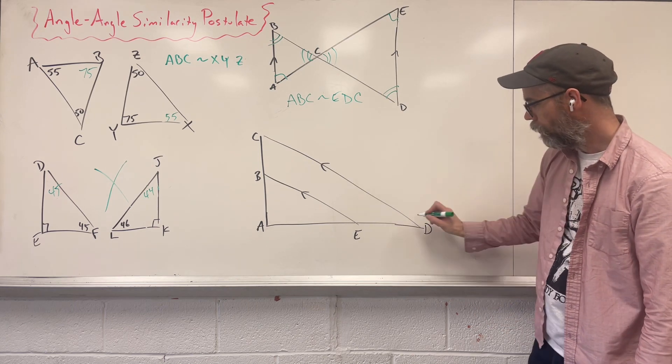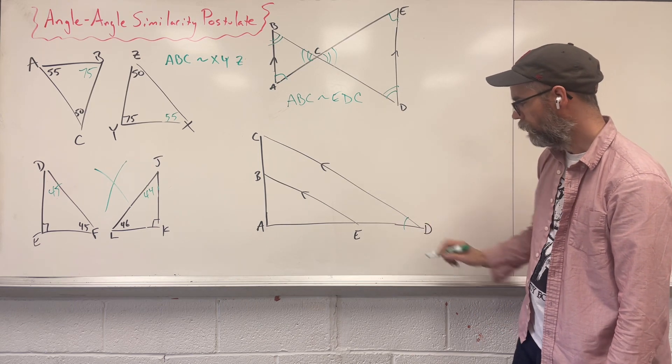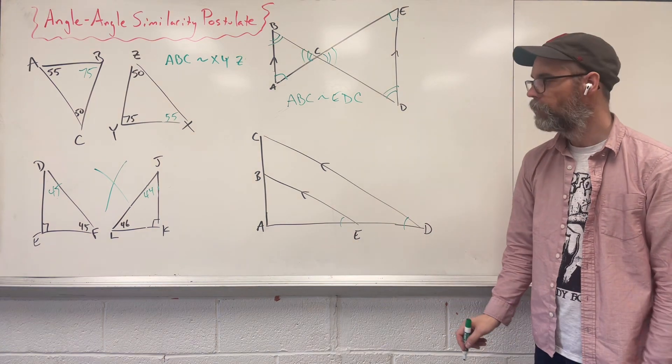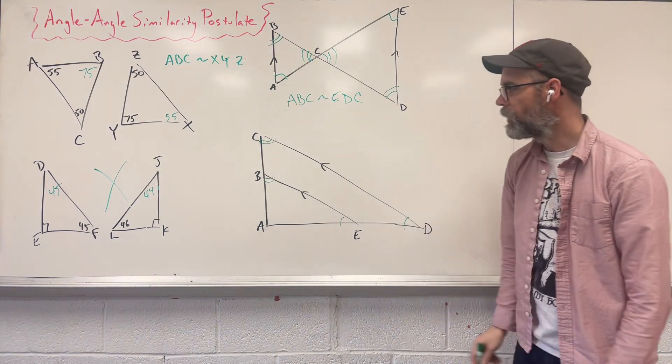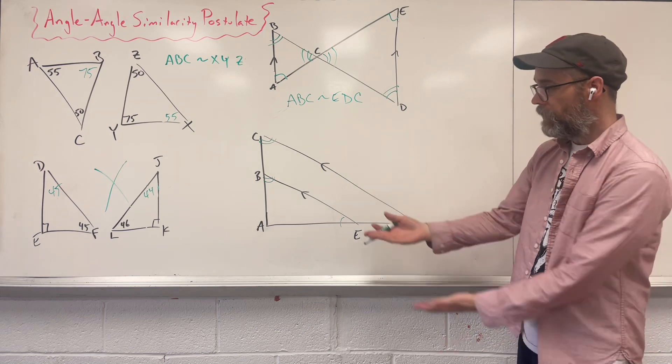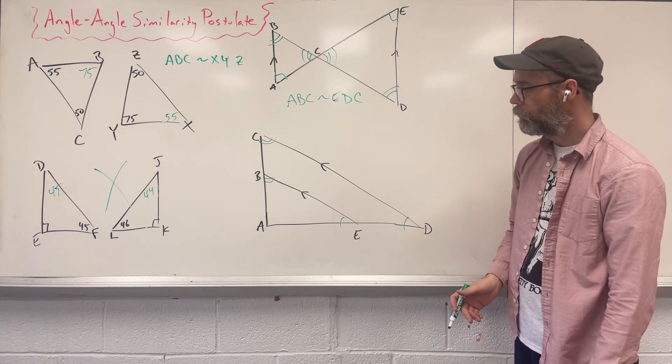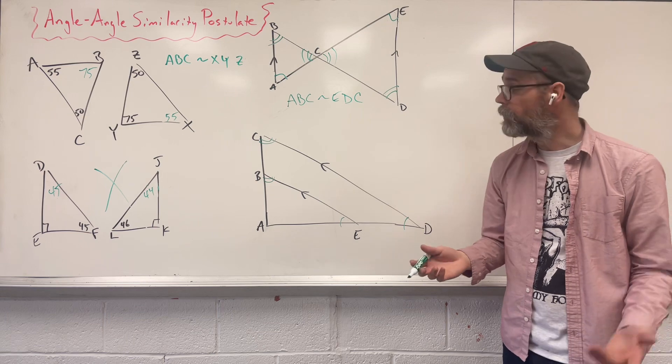So I know that this angle is the same as that. And I know that this angle is the same as that. And by default, here we are, we have two triangles that they have to be similar to each other.